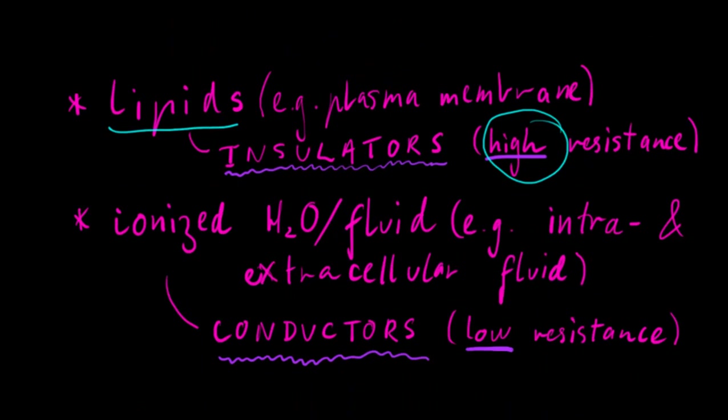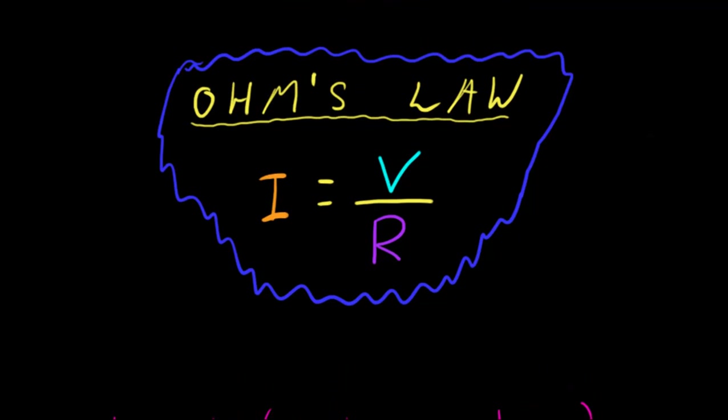In the example of an ionized fluid, for example water, or if we had intracellular or extracellular fluid which is ionized, we call these conductors because they have a low resistance. And again, if we go back to Ohm's Law, a low resistance means that we have more opportunity for the movement of electrical charge or current.